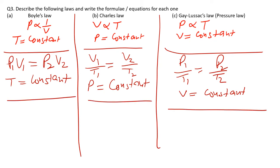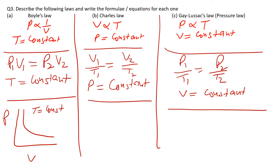The graph for Boyle's Law: if we take volume on the x-axis and pressure on the y-axis, the shape of the graph is decreasing (a curve). The temperature of the gas must be constant. When the value of V is increasing, the value of P is decreasing — this is the inverse relation, so pressure is inversely proportional to volume.